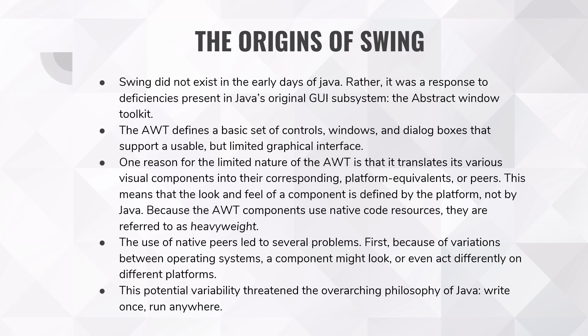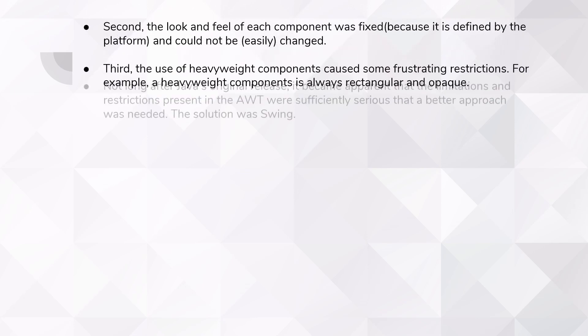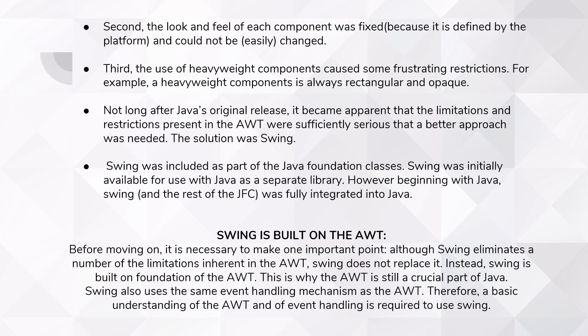They needed a new toolkit. Second, the look and feel of each component was fixed because it is defined by the platform and would not be easily changed. That is, once you design a certain style of graphics, it wouldn't be changed again. It was the same on all platforms, but the way it looks and feels would differ from platform to platform. Third, the use of AWT components caused some frustrating restrictions. For example, an AWT component is always rectangular and opaque — it just means that the graphics weren't much clearer.